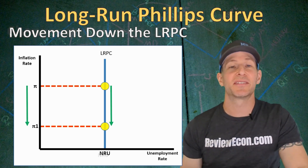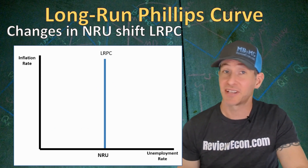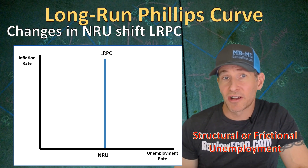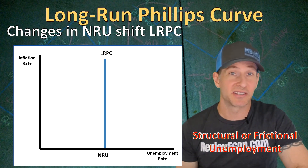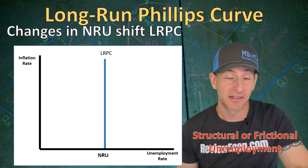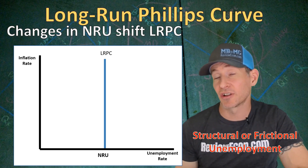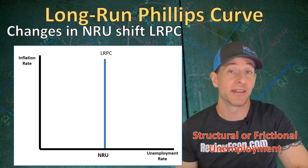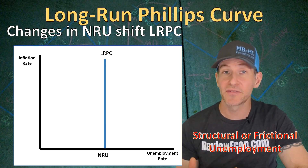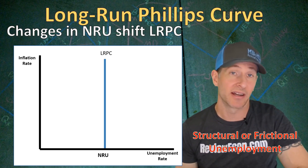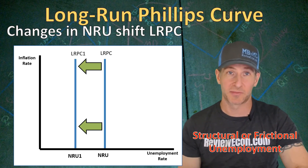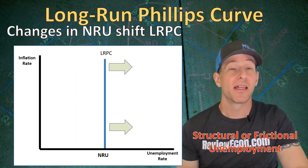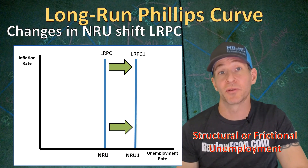Like most other curves in this class, the long-run Phillips Curve can shift, and it will shift with changes in the natural rate of unemployment. If we have a decrease in structural unemployment, perhaps through increases in job training programs from the government, or a decrease in frictional unemployment, perhaps through new websites that help connect employers with employees looking for work, either of those would decrease the natural rate of unemployment, shifting the long-run Phillips Curve to the left. And if we had a change that increased either structural or frictional unemployment, that would shift the long-run Phillips Curve to the right.